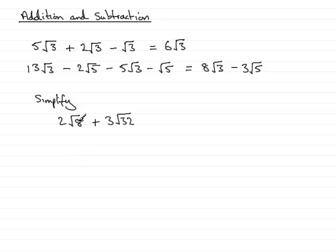Well, by the multiplication rule, we can split this 8 into two factors, one of which is a square number. 4 times 2 is 8, so we can say that 2 root 8 is going to be the same as 2 times the square root of 4 times 2, that being 8.